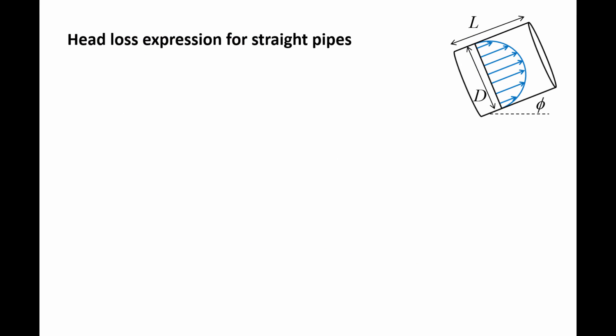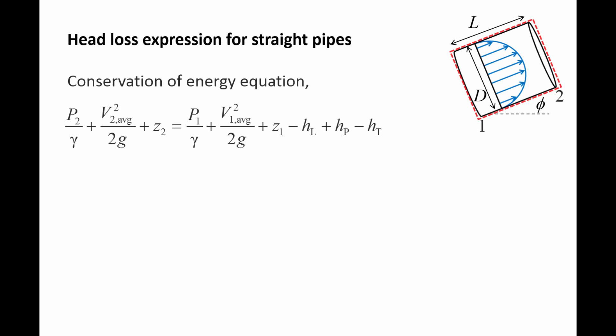The loss of pressure in a pipe system is due to frictional losses, which are quantified by the head loss term in the conservation of energy equation. Here we have a section of straight pipe of length L and diameter D with the pipe oriented at an angle phi. We draw a control volume around the pipe section and apply the conservation of energy equation. We will label the inlet as 1 and the outlet as 2. The velocity at the inlet and outlet are the same, so the v squared over 2g terms cancel out. Additionally, the pump head and turbine head terms are zero because there are no pumps or turbines in the control volume. We now have the pressure head plus elevation head at the outlet equals the pressure head plus the elevation head at the inlet minus the head loss.